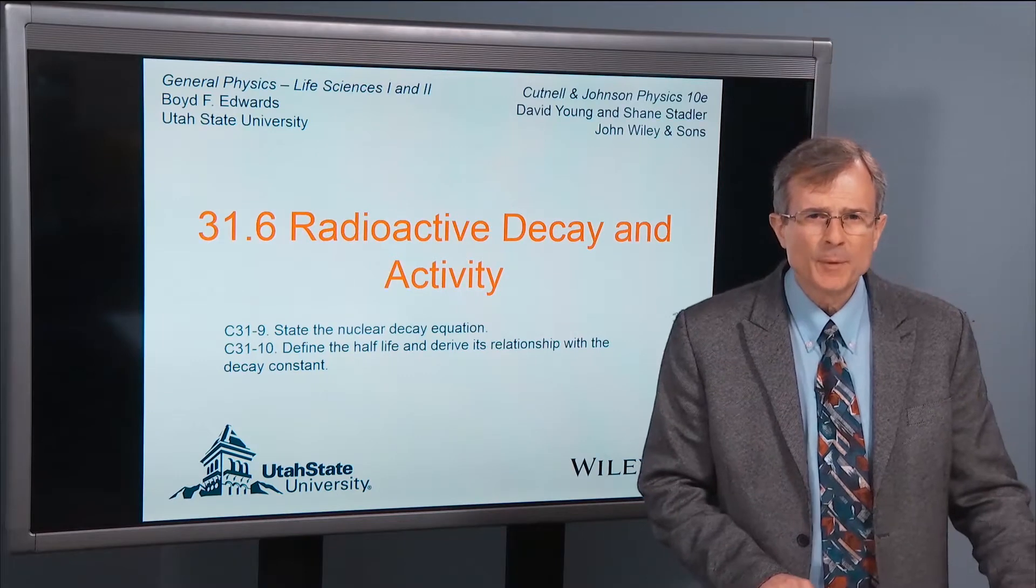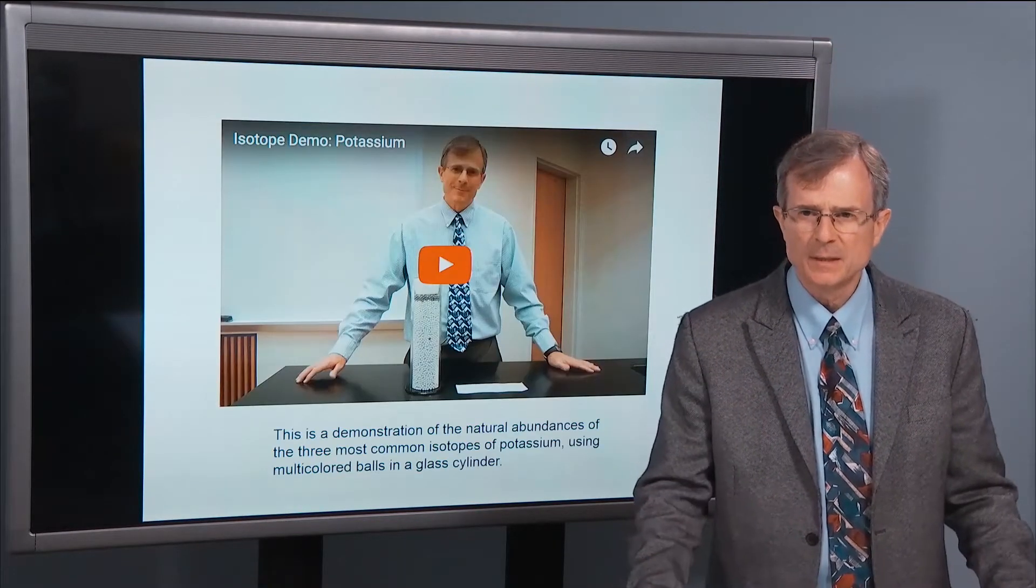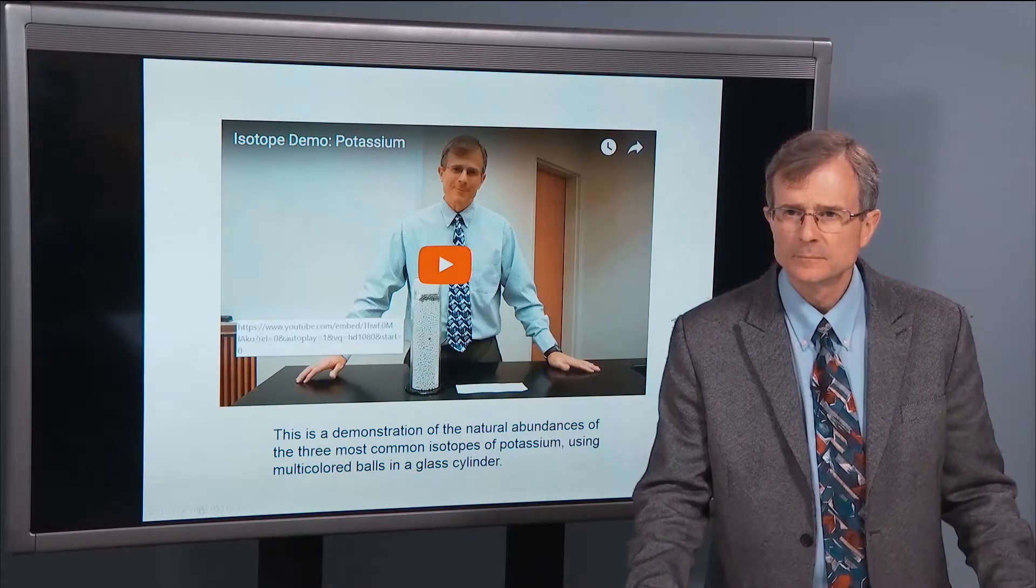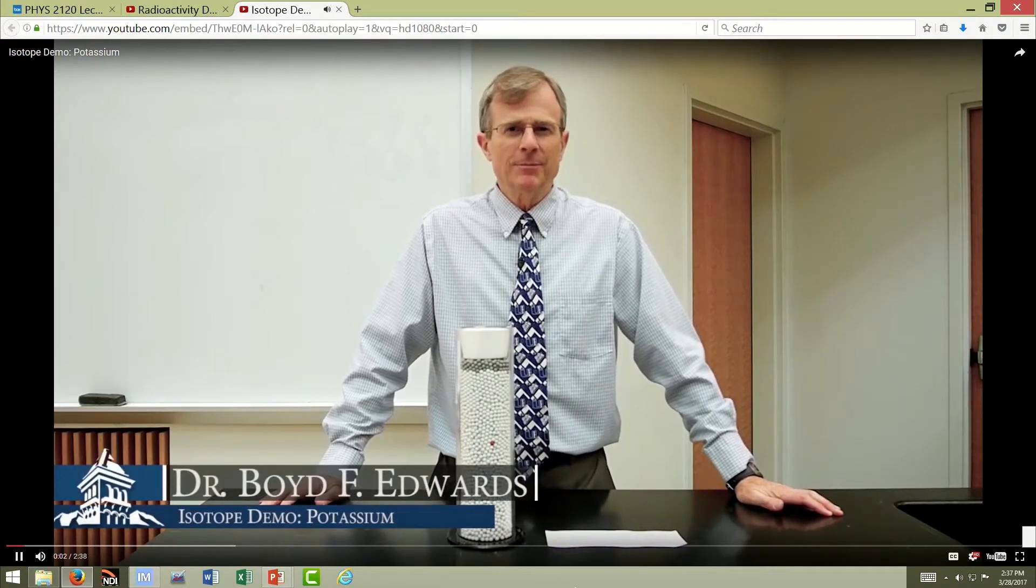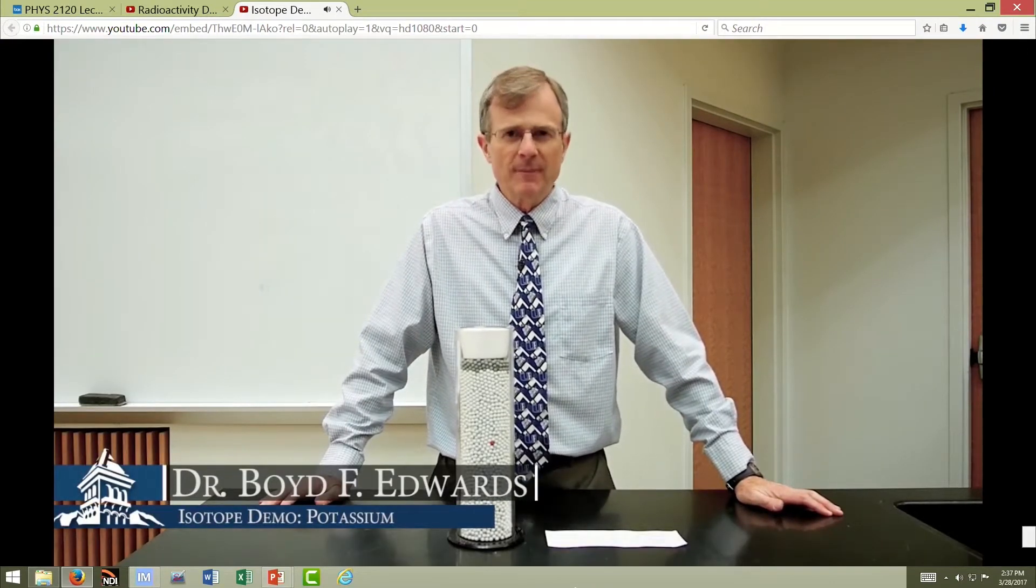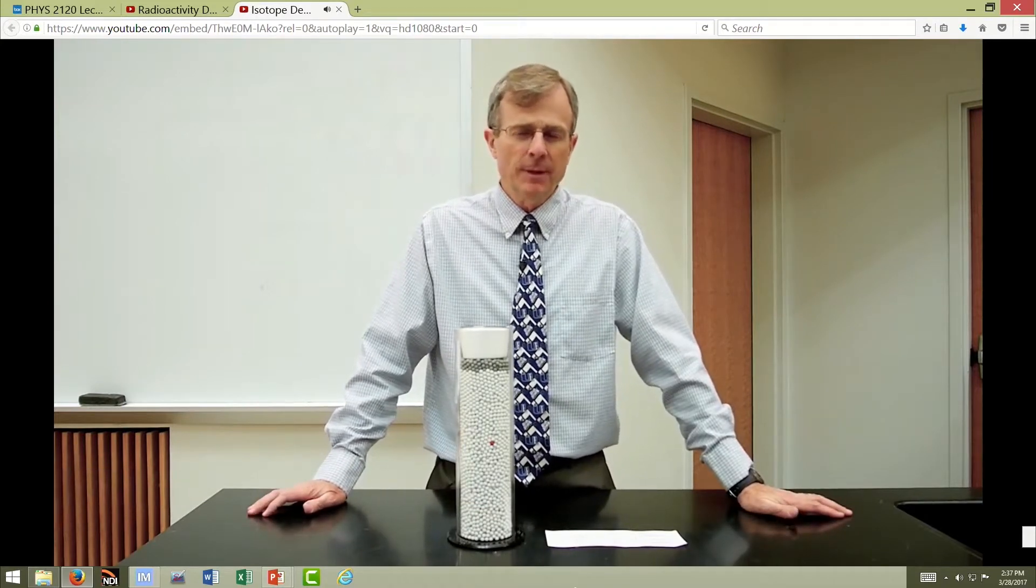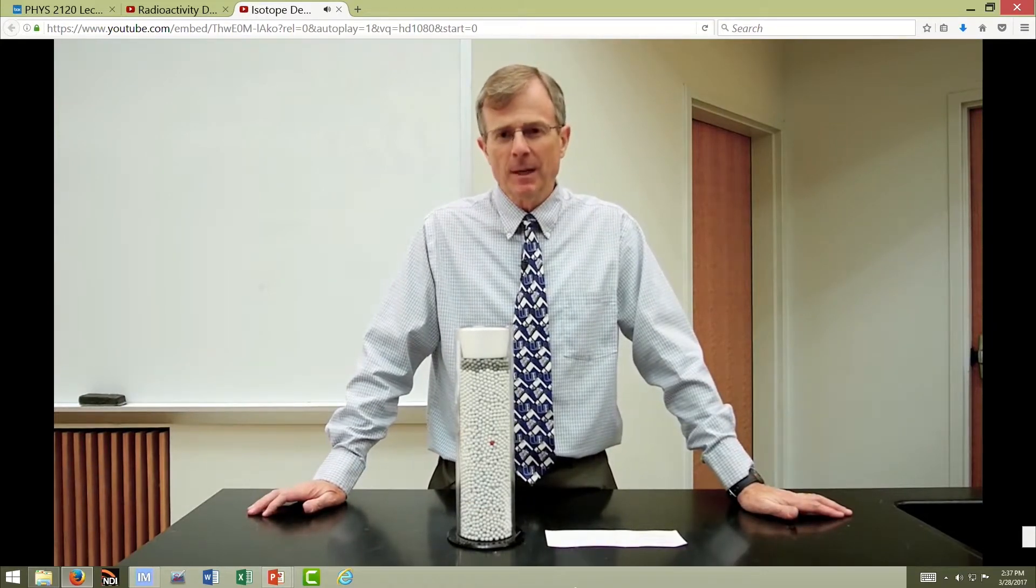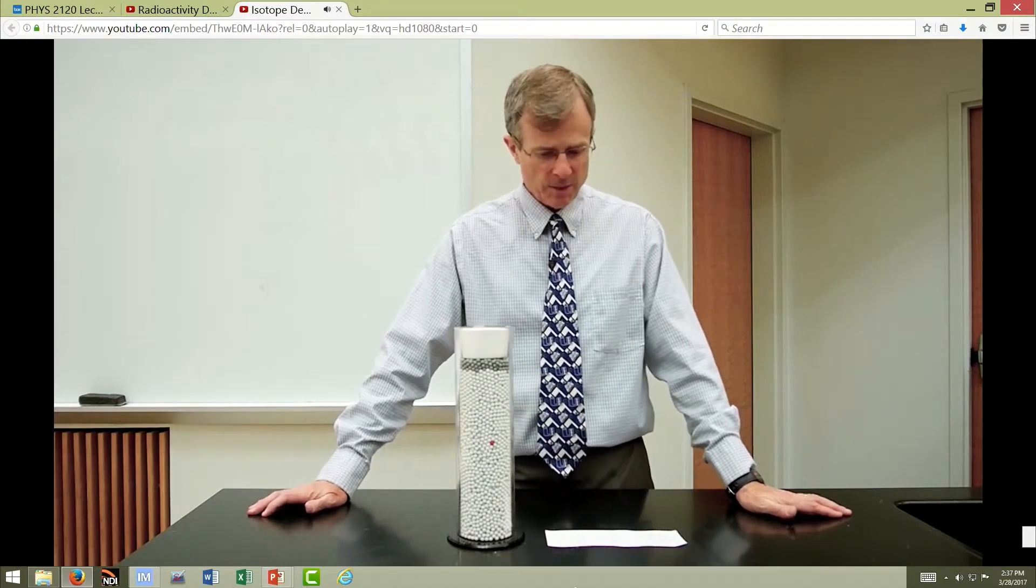First, I'd like to talk about the abundances of different isotopes of potassium. This is an illustration of different isotopes. Many atoms have different isotopes. Potassium, for example, has at least three isotopes.